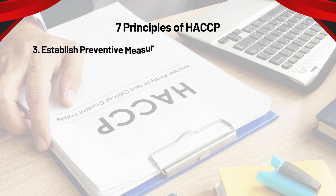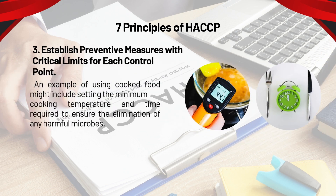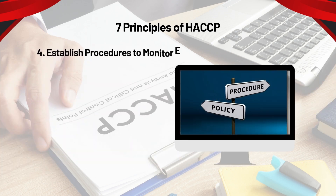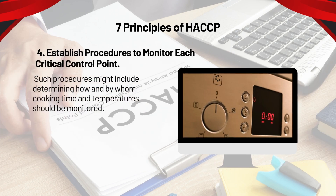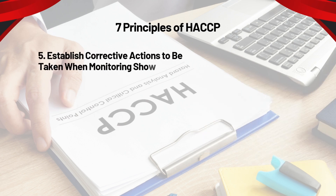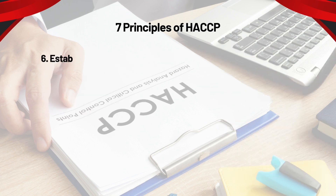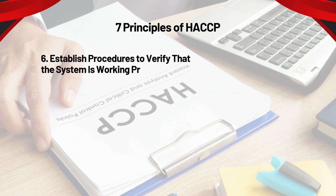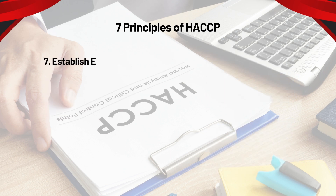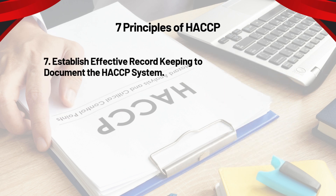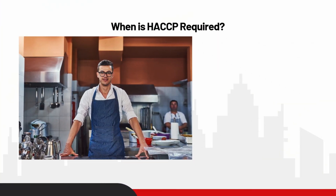Principle 3: Establish preventive measures with critical limits for each control point. For example, setting the minimum cooking temperature and time required to ensure elimination of any harmful microbes. Principle 4: Establish procedures to monitor each critical control point, such as determining how and by whom cooking time and temperature should be monitored. Principle 5: Establish corrective actions to be taken when monitoring shows that a critical limit has not been met — for example, reprocessing or disposing of food if the minimum cooking temperature is not met. Principle 6: Establish procedures to verify that the system is working properly, such as testing time and temperature recording devices. Principle 7: Establish effective record keeping to document the HACCP system, including records of hazards and their control methods, monitoring of each critical control point, and actions taken to correct potential problems.